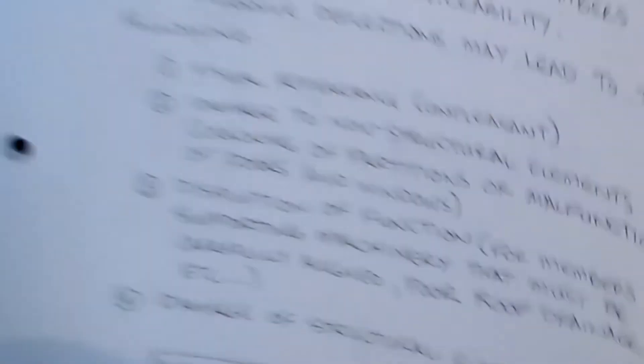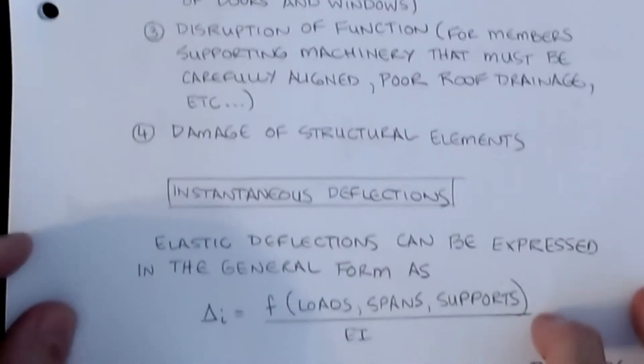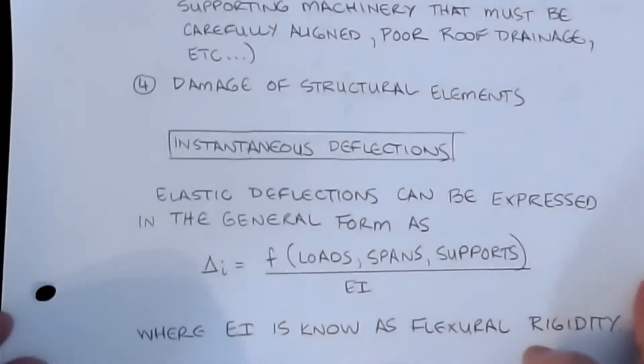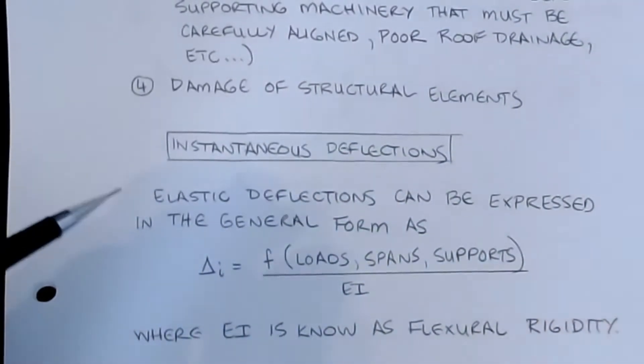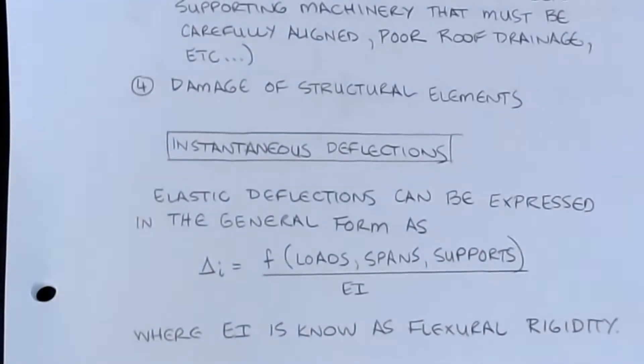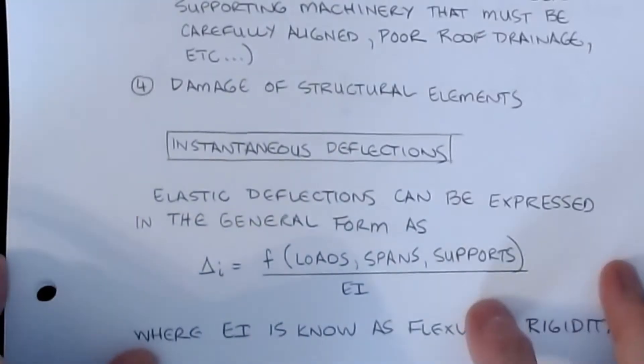Now deflections themselves are broken into two categories. We have what we call instantaneous deflections as well as long-term deflections. And so the instantaneous deflections are the ones that are attributed to the loads that are applied directly to the beam. And so we'll kind of talk about what those are here. Long-term deflections are something related to sustained load or sustained behavior due to things like creep of the concrete material itself. So we'll start our discussion first off with the instantaneous deflections.